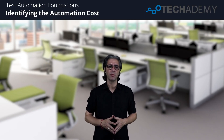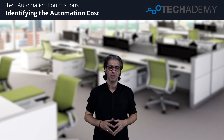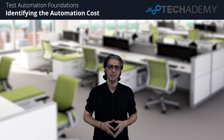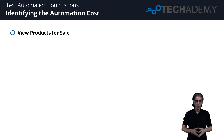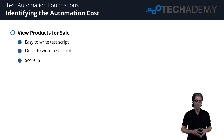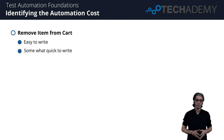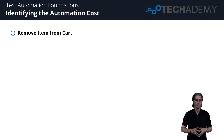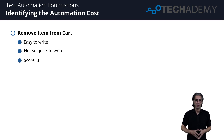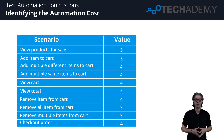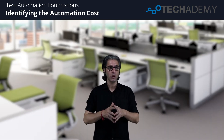Hi everybody and welcome back. In this session we see how to assign a cost score of 1 to 5 for the cost of automation, determined by how easy and how quickly a test can be scripted. View products for sale: easy and quick to write — scores 5. Adding an item to cart: easy and quick — scores 5. Remove from cart: requires adding an item first, easy to write, somewhat quick — scores 4. Remove items from cart: requires adding multiple items, easy to write, not as quick — scores 3. Order checkout: easy to write and somewhat quick — scores 4. Assigning a cost to each scenario helps identify most variants.